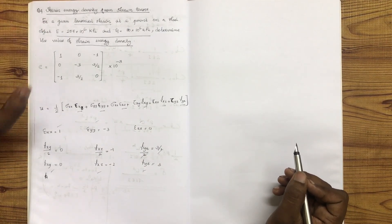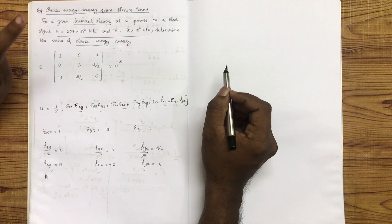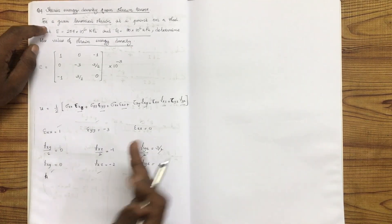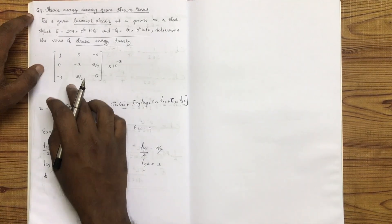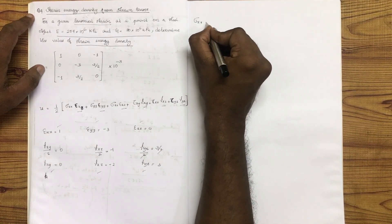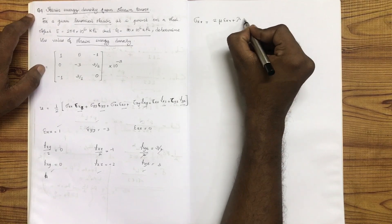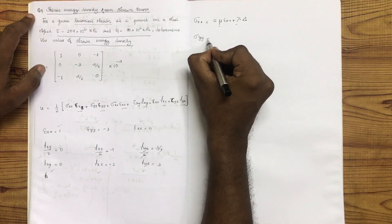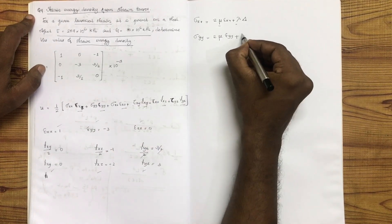Now we need to find the stresses, that means σxx. We use the Lamé coefficients. Sigma xx equals 2 into mu into εxx plus lambda into delta. Similarly, sigma yy equals 2 into mu into εyy plus lambda into delta, and sigma zz equals 2 into mu into εzz plus lambda into delta.